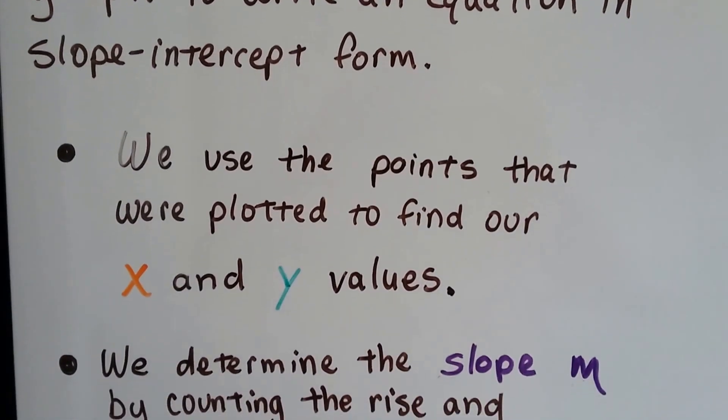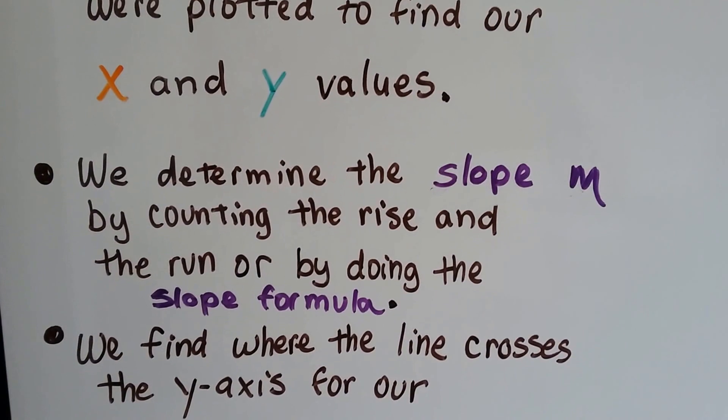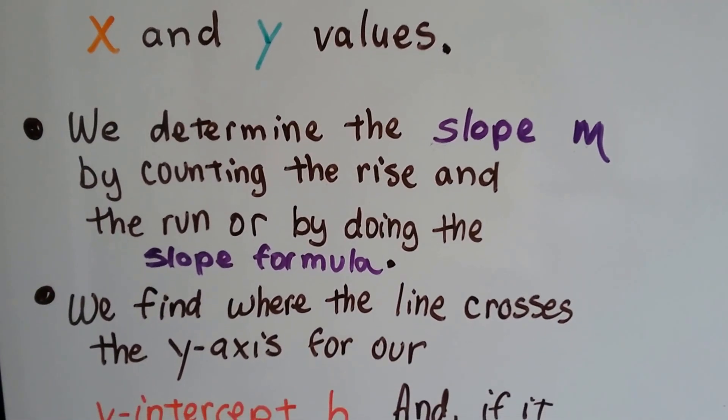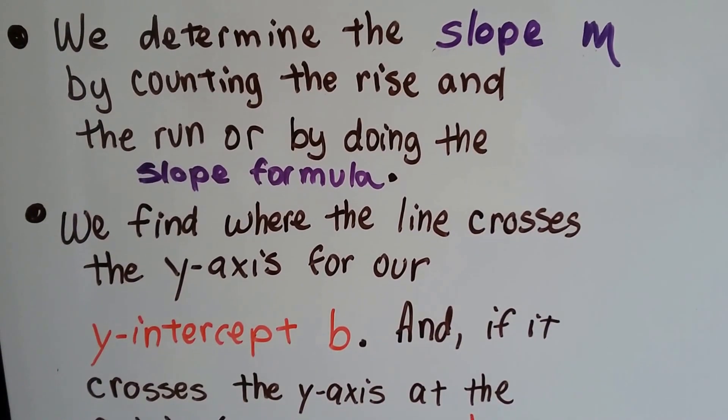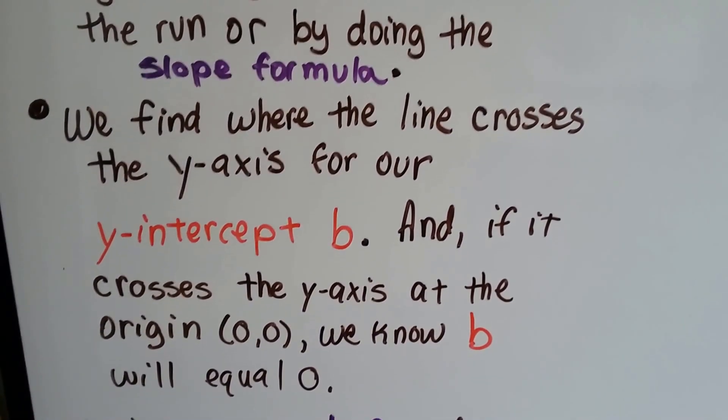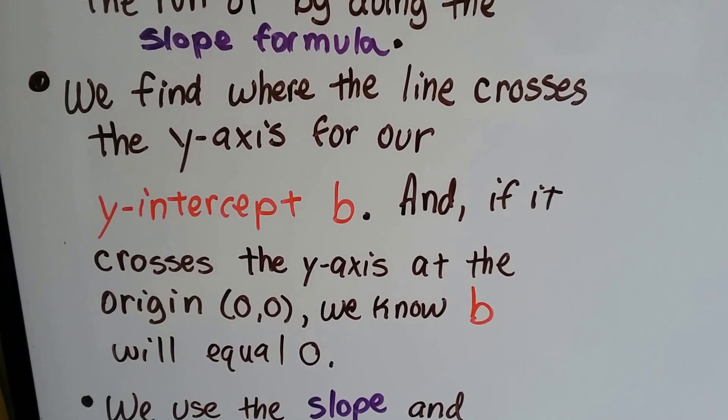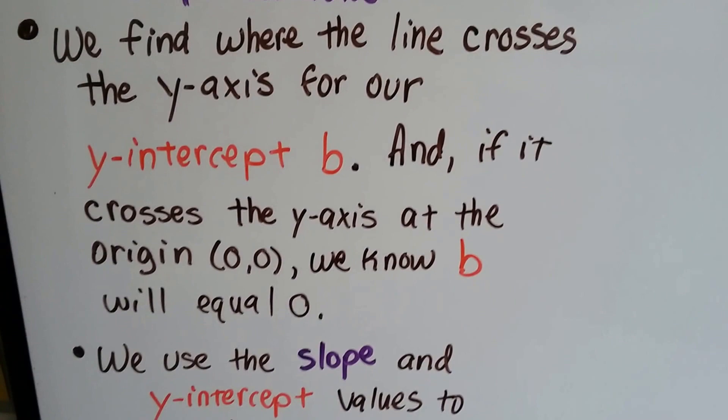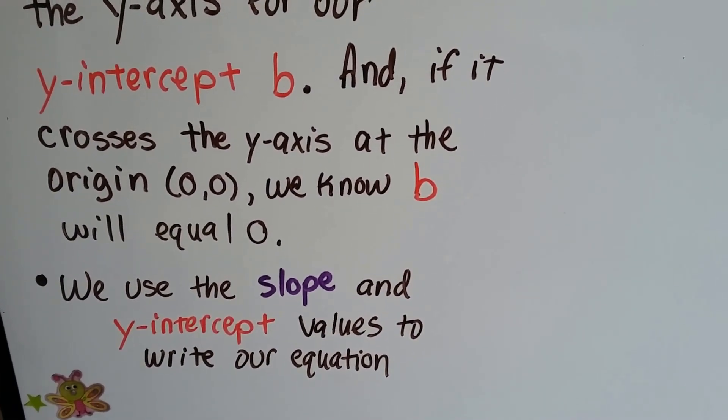We use the points that were plotted to find our x and y values. We determine the slope by counting the rise and the run or by doing the slope formula. We find where the line crosses the y-axis for our y-intercept b. And if it crosses the y-axis at the origin, the 0, 0, we know b will equal 0. We use the slope and y-intercept values to write our equation.